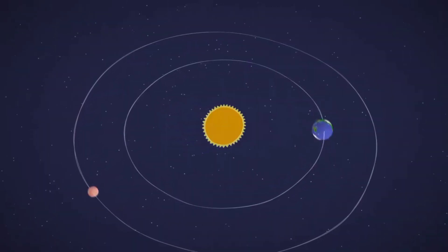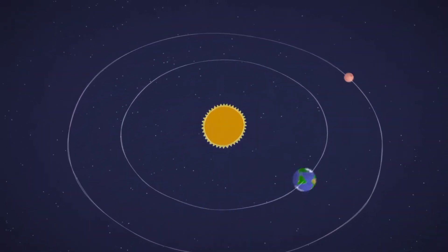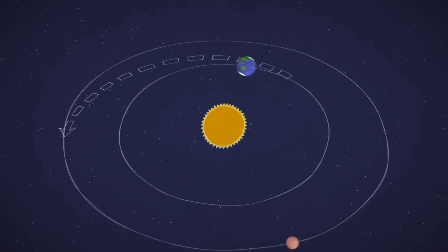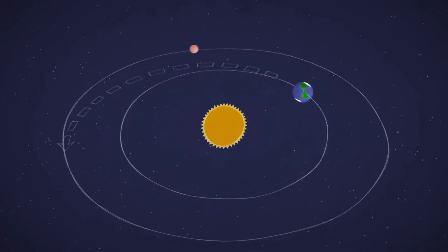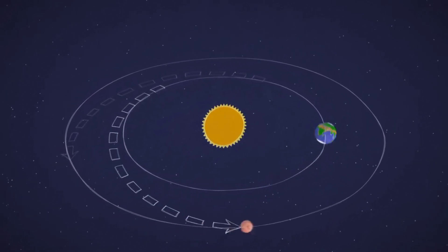The timing of Mars years is also important. Every 26 months we come closer to Mars, so it's one of the best times to send spacecraft. A shorter trip means less time and fuel spent getting there.